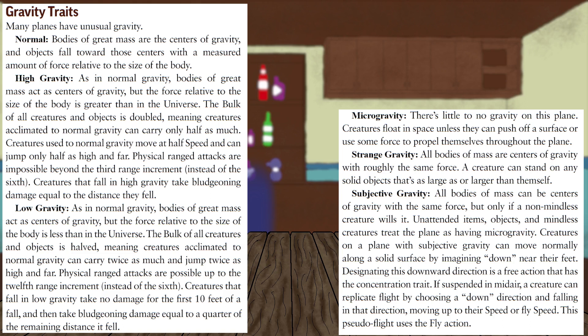Subjective gravity is the second most common gravity trait, or the only one actually being used other than normal gravity. On subjective gravity planes, unattended items and mindless creatures float as if in microgravity. Any creature with a mind can choose a specific direction to be down, allowing them to walk across any surface they choose, as well as fly.